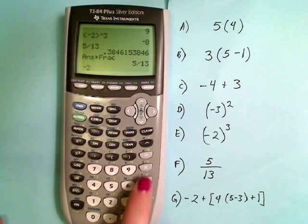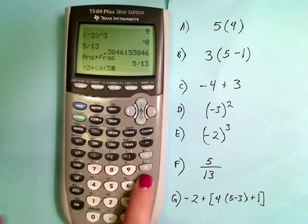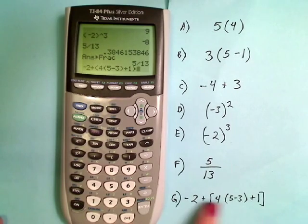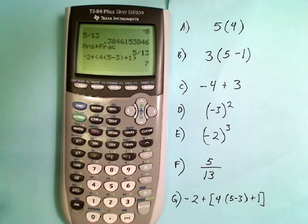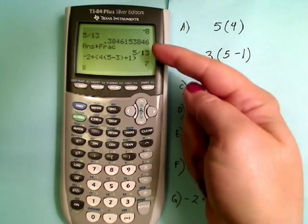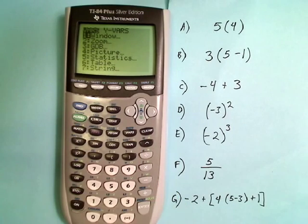All right, so -2, and I made sure I used this negative down here, not the minus but the negative. Plus, and I'm going to use parentheses in place of these two brackets. So we have 4 times 5 minus 3 plus 1. And again, parentheses. So these are parentheses. These are parentheses. And we press enter and we get 7. And you should feel free to double check that 7 really is the right answer.